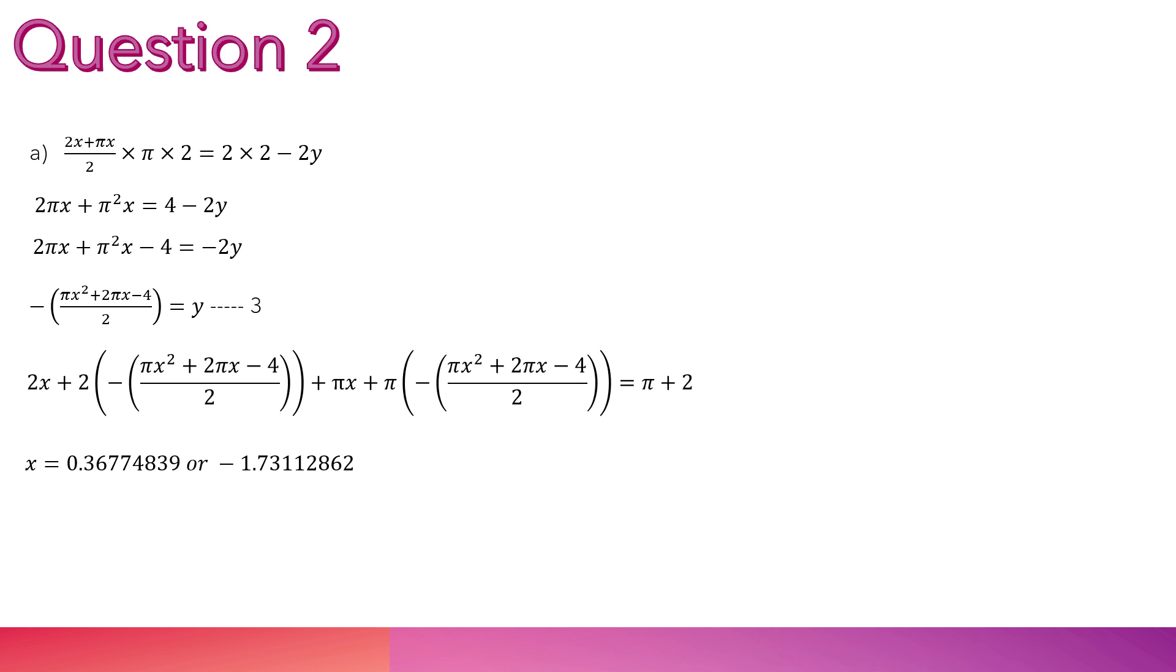Now, I can substitute the y in my equation 1, the perimeter equation, with equation 3. Now, we get x equals 2 numbers. Which one should I choose? I say the positive one, as we can't have a negative distance. So you accept the positive and reject the negative.